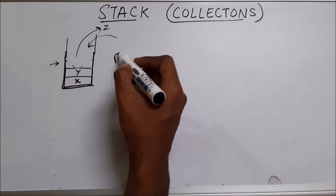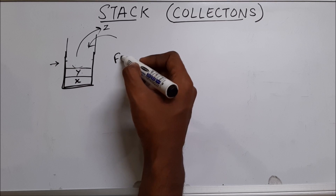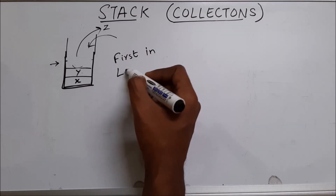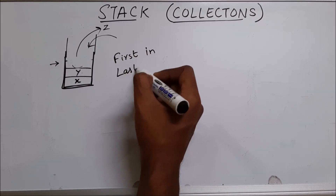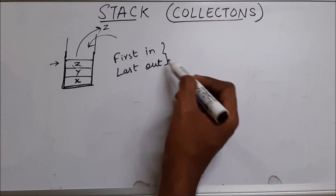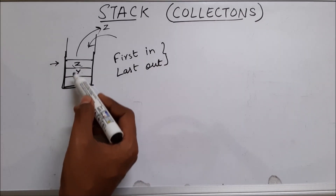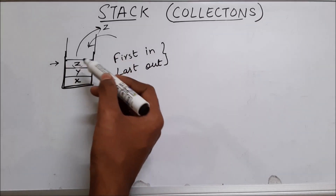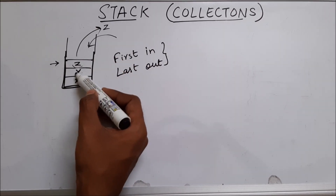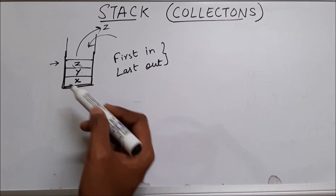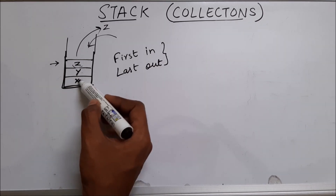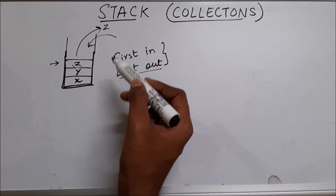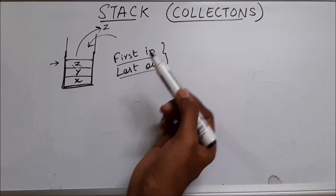So stack is first in, last out. Let's say we have X, Y, and Z. You can see X is the one which was put inside first, then comes Y, then comes Z. So X was put in first but X is the one which is going to come out last. So this is why stack is first in, last out.